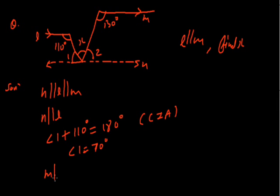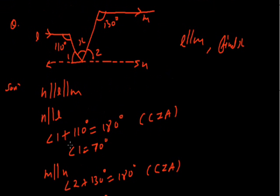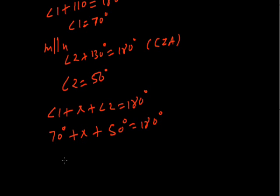Similarly, since line M is parallel to the auxiliary line, angle 2 plus 130 equals 180 degrees, so angle 2 equals 50 degrees. Since all angles at point P on the straight line N sum to 180 degrees, angle 1 plus angle X plus angle 2 equals 180 degrees. So 70 plus X plus 50 equals 180, giving X equals 180 minus 120, which is 60 degrees.